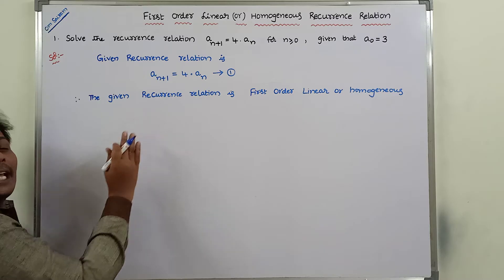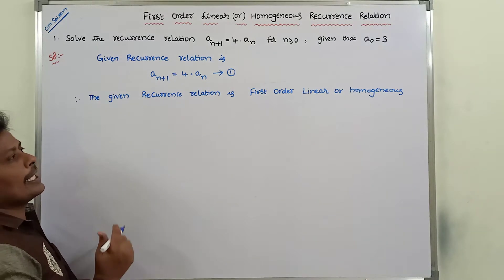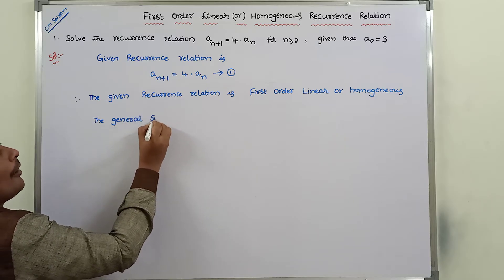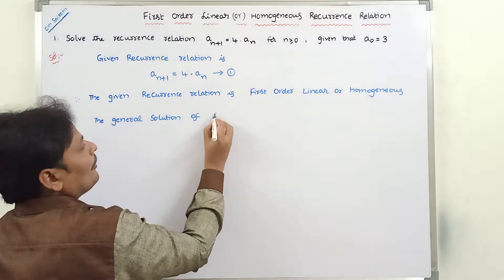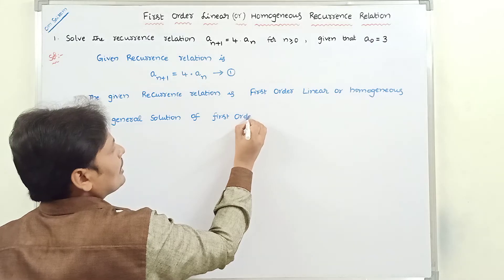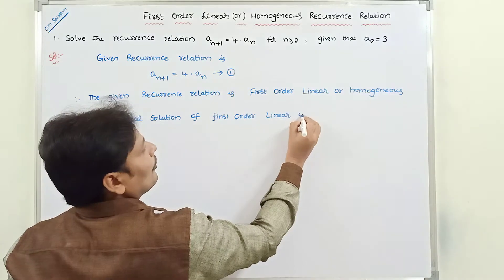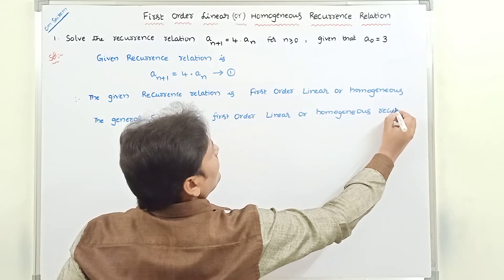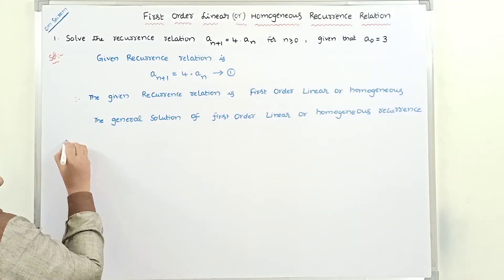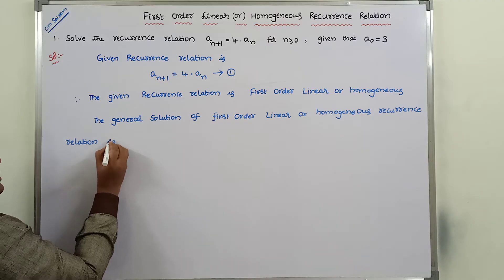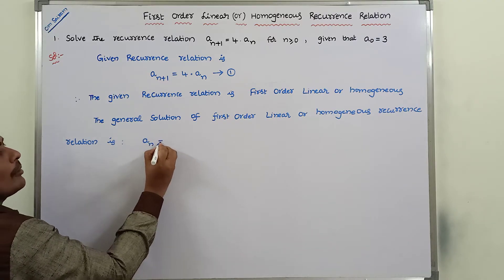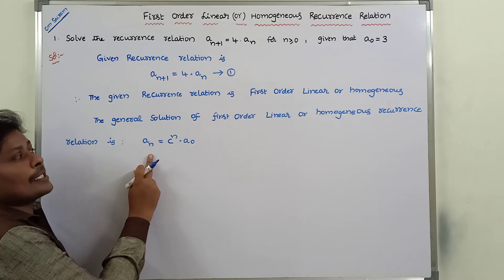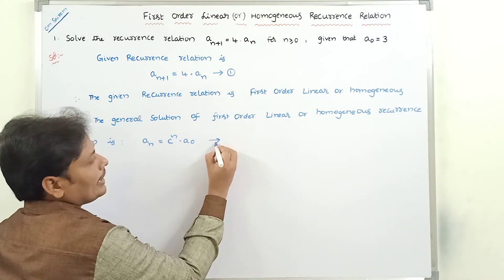Whenever the given recurrence relation is a first-order linear homogeneous recurrence relation, the general solution is: a(n) = c^n · a₀. This is the general solution of the first-order linear recurrence relation. This is equation 2.